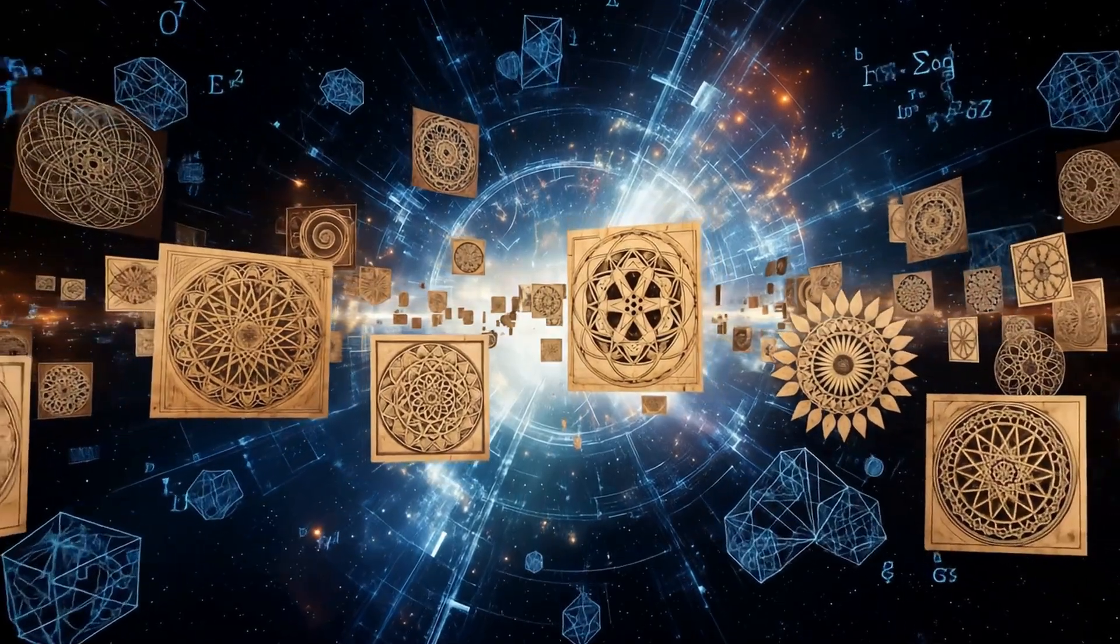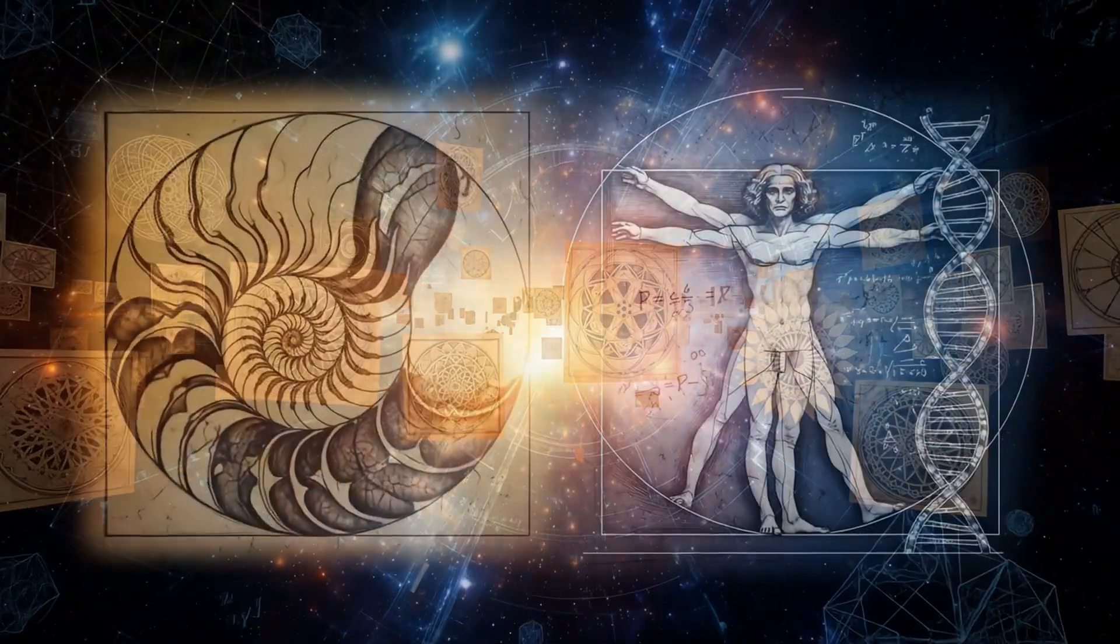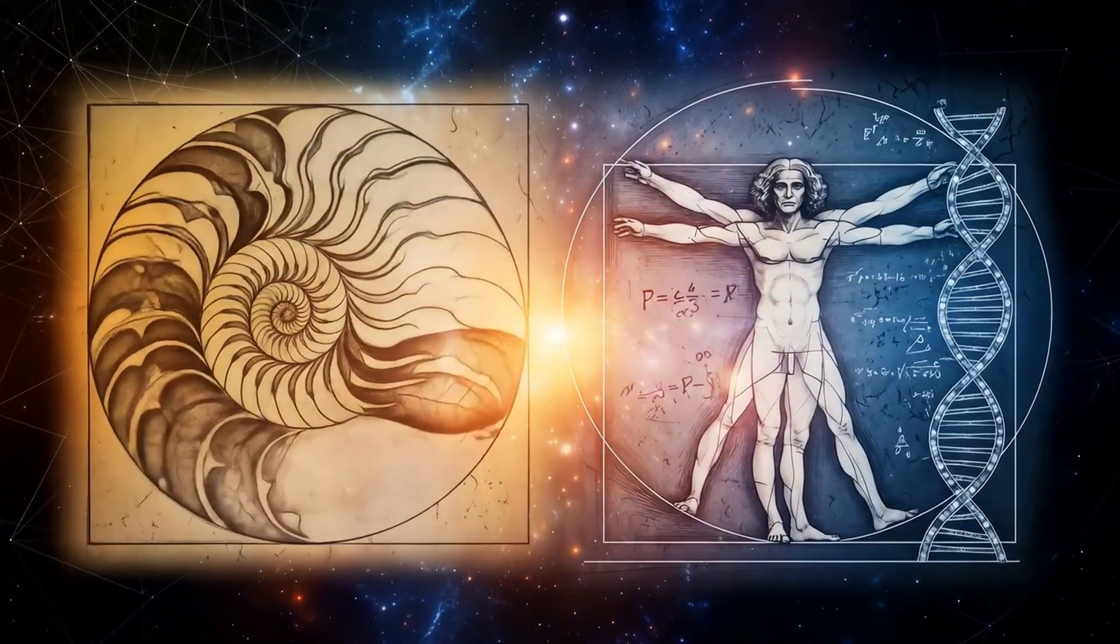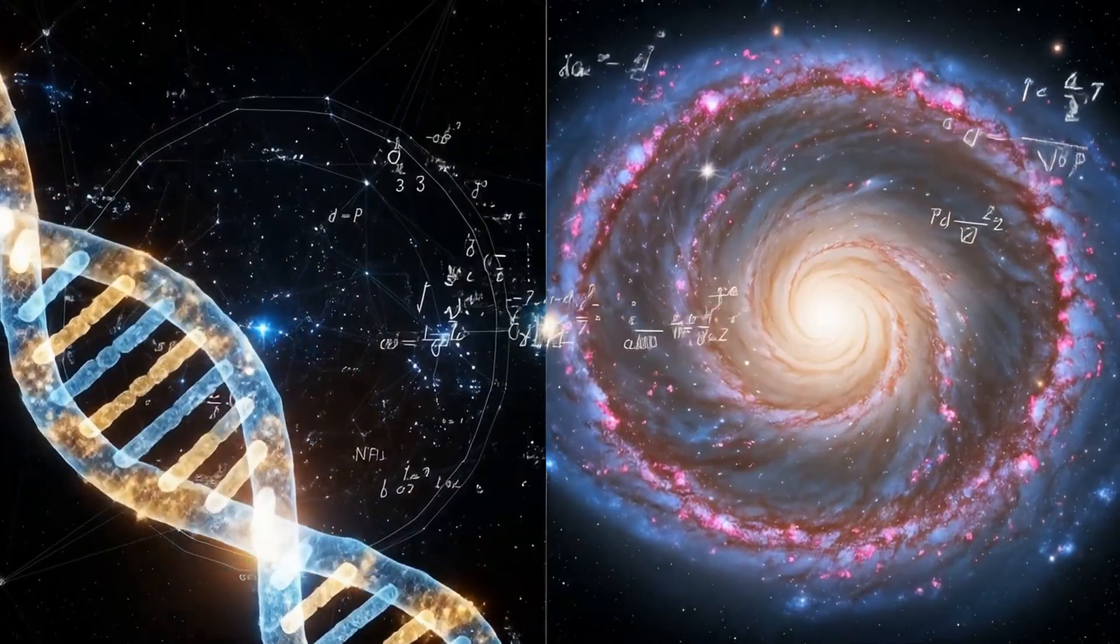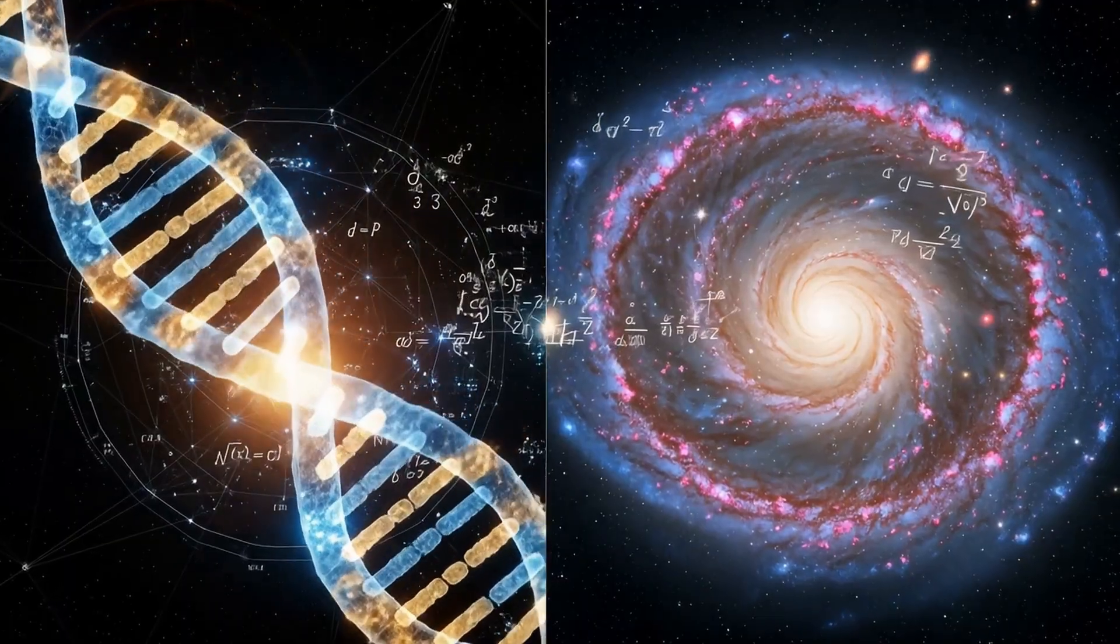These spirals emerge across nature, not by accident, but because the universe is encoded in this pattern. DNA, galaxies, hurricanes, they are all time crystals printed through entangled light.